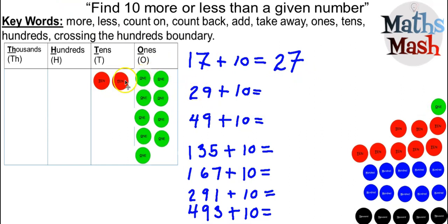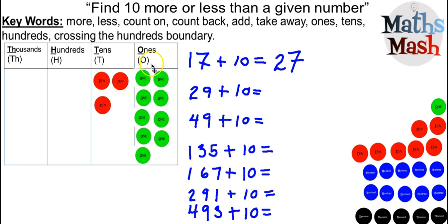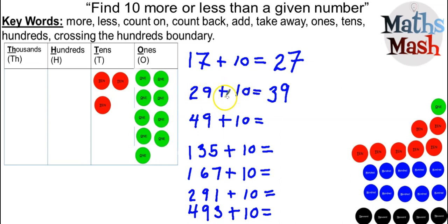Now we're looking at the number 29. I have nine ones and two sets of 10 — this is what 29 looks like using counters — and I want to find out what is 10 more. Just as we did with 17, I just bring 10 more over. Now you can see that I've got nine ones; I haven't done anything to the ones column. The only thing I've done is in the tens column — I've added another set of 10. So I can write my units digit because that hasn't changed, and now the only thing I need to check is the tens column: 10, 20, 30 — three sets of 10 make 30. So 29 plus 10 is 39, or 10 more than 29 is 39.